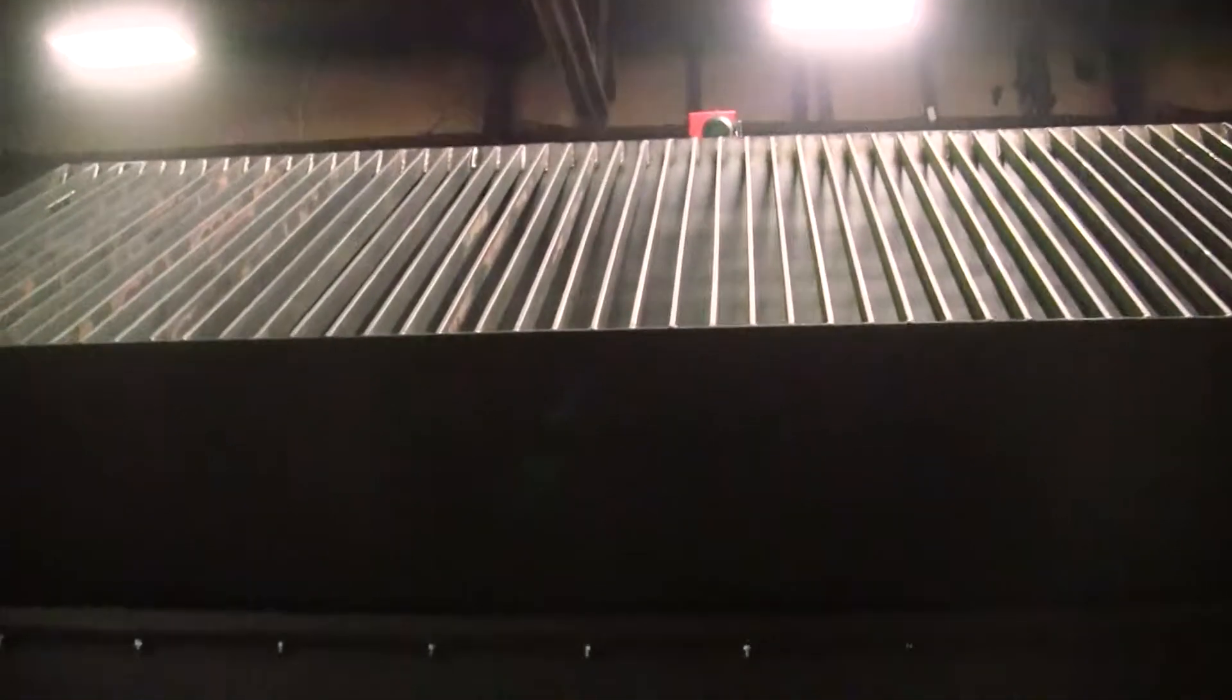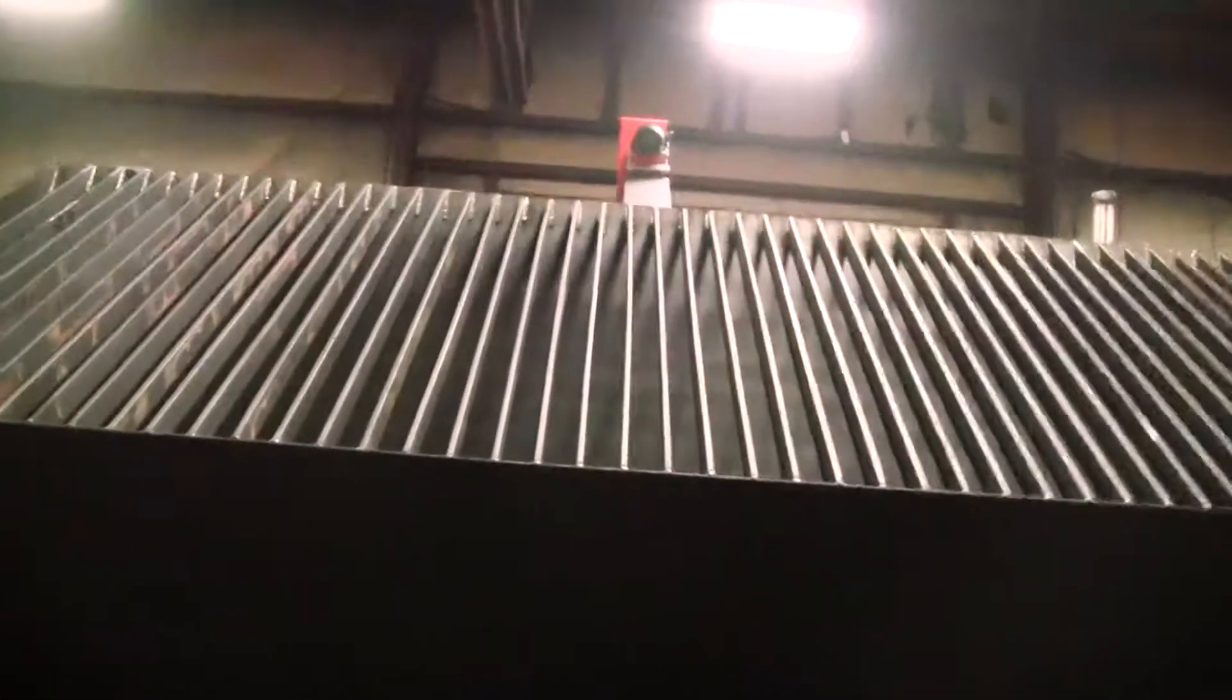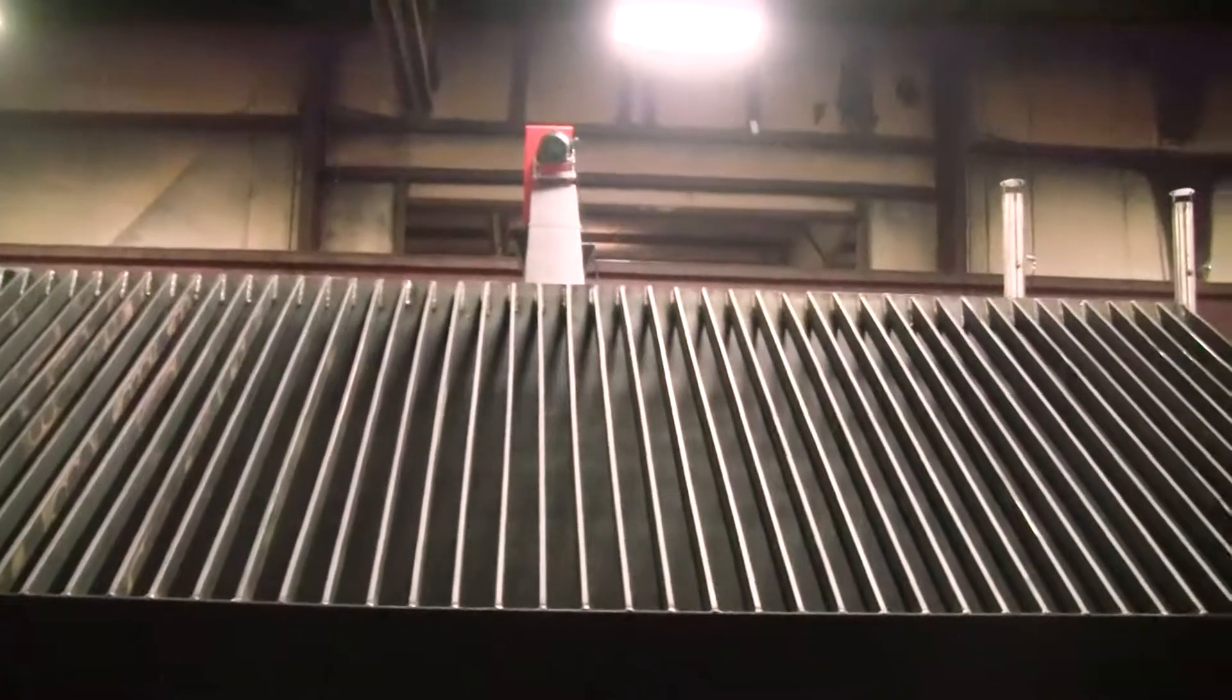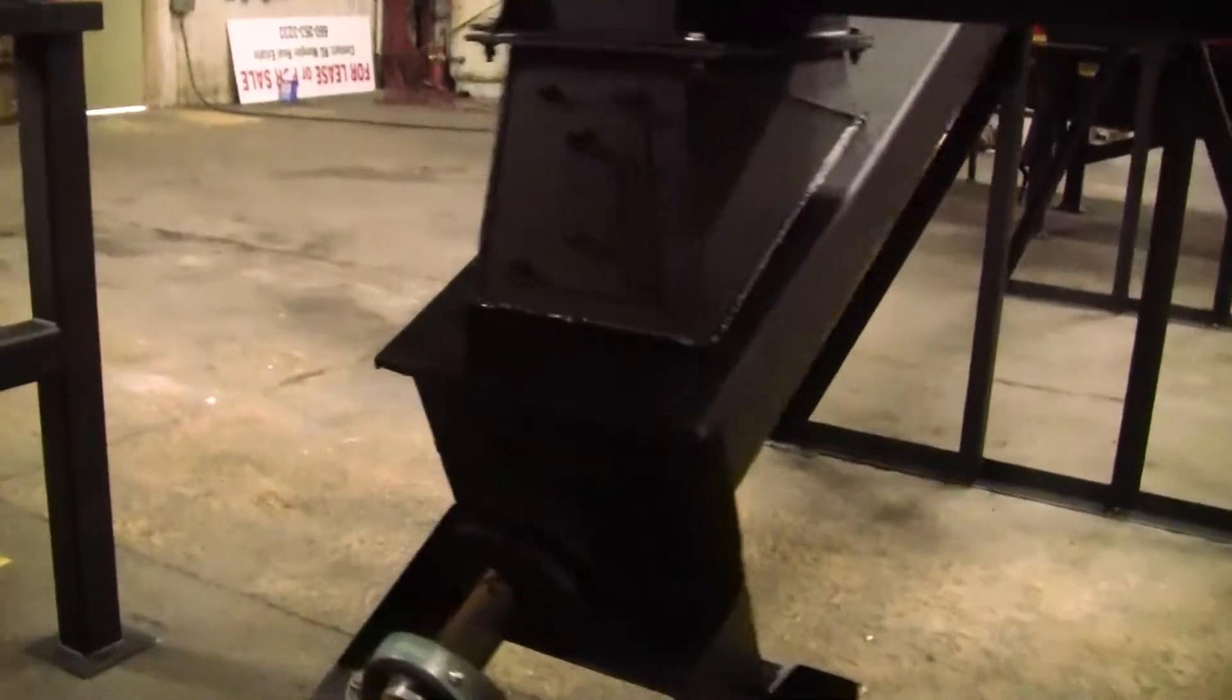Units fed by a twin-screw center discharge live bottom feeder with a grizzly hopper. Grizzly hopper feeds an incline 30-foot screw conveyor.